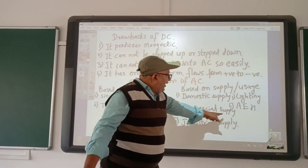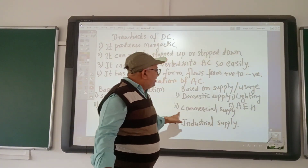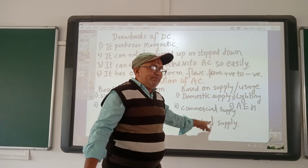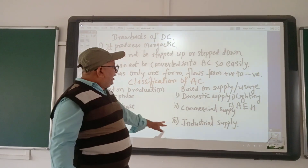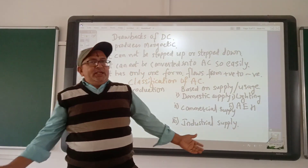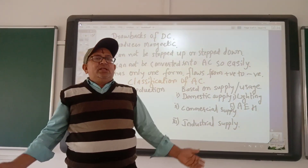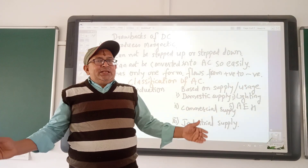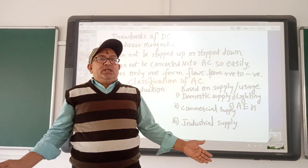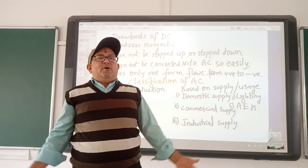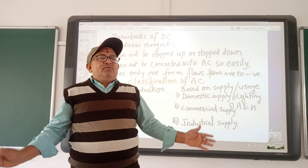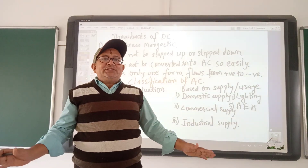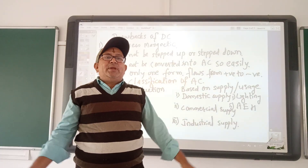The rate of commercial supply will be higher than domestic supply. Industrial supply is the electrical energy supplied to industries in huge amounts for manufacturing purposes. That is known as industrial supply.